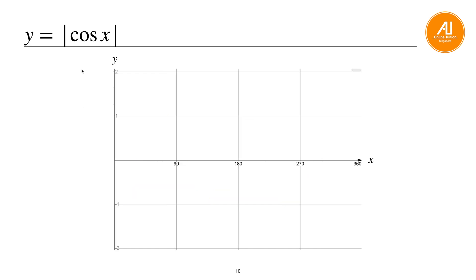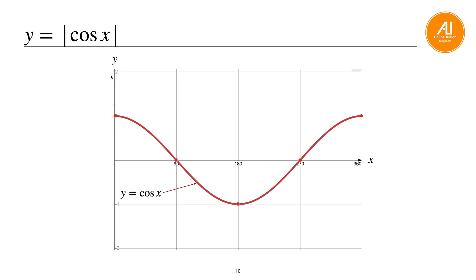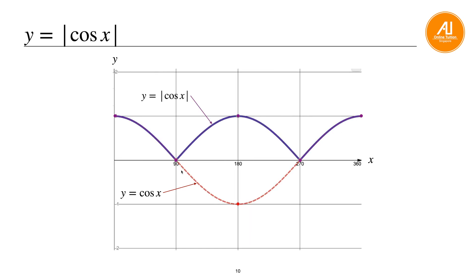For modulus of cosine x, draw the original cosine curve first. The modulus function reflects any negative region (below the x-axis) upwards. So minus one becomes one, while positive values stay the same. The resulting shape looks like a 'W', with all values at or above the x-axis. Label it y equals to modulus cosine x.